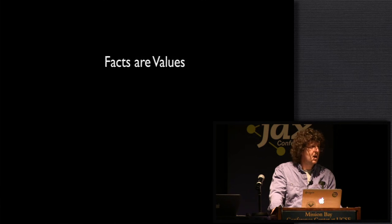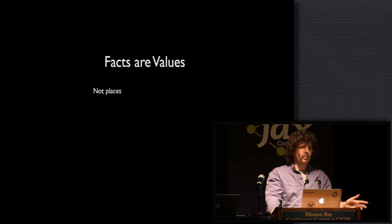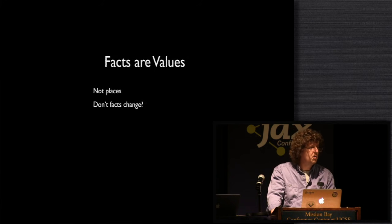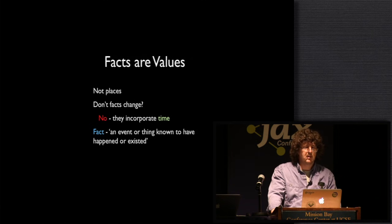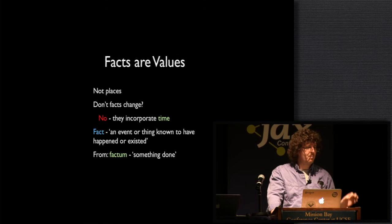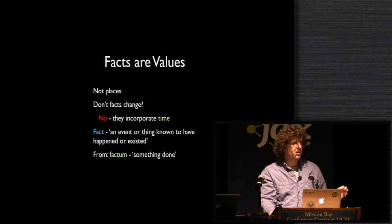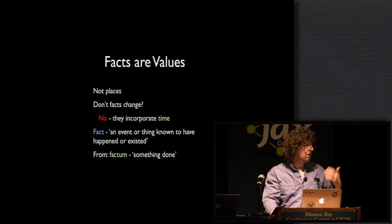Let's get back to information technology and back to facts. The first fact about facts is that facts are values — they're not places. That slide up front was a lie. Everybody's sitting there saying: but don't facts change? Don't we have a president at one time and a new president later? No, they don't — because facts incorporate time. What does fact mean? The dictionary says a fact is something that happened, something known to have happened or existed. It comes from a Latin past participle meaning something that happened. Bill Clinton was president — that fact will always be a fact. We can have a new president — that's a new fact.